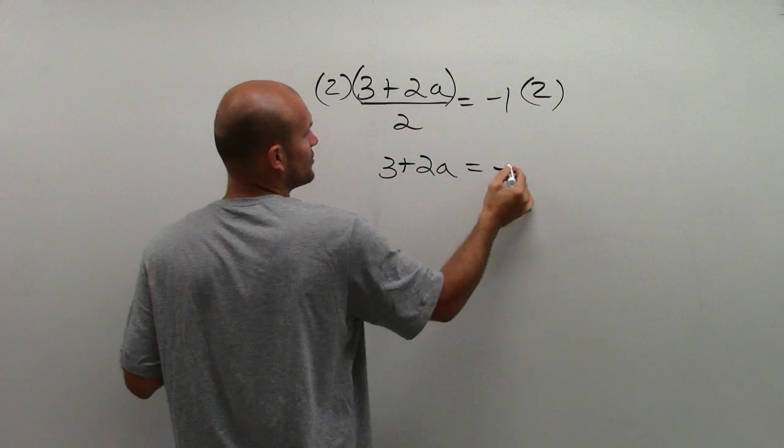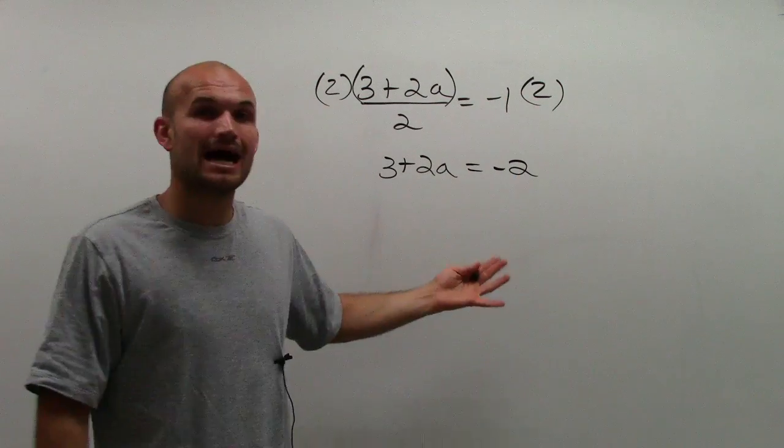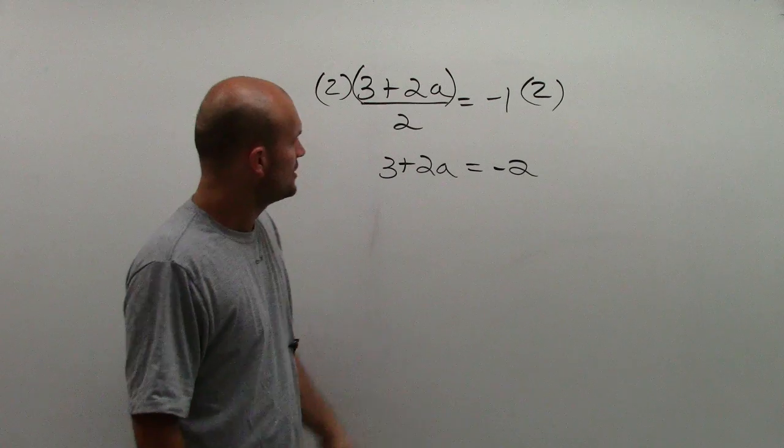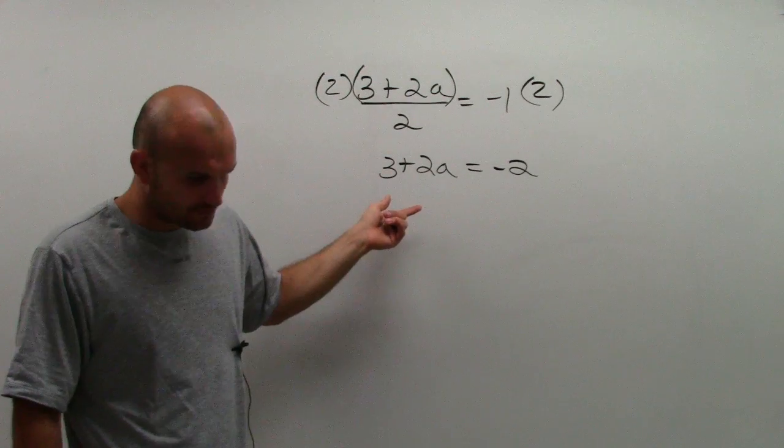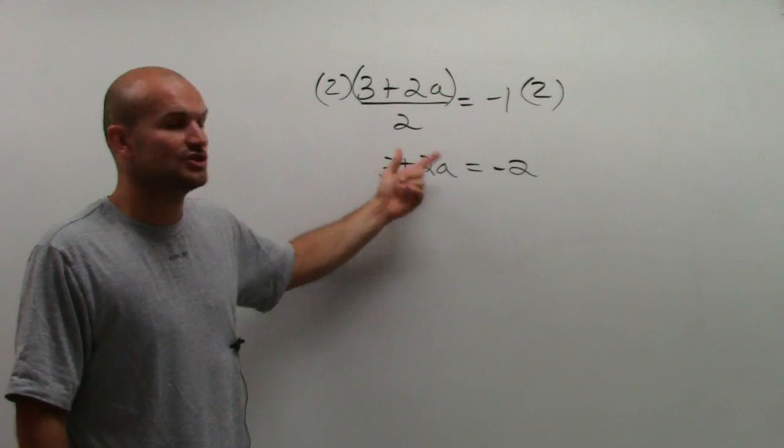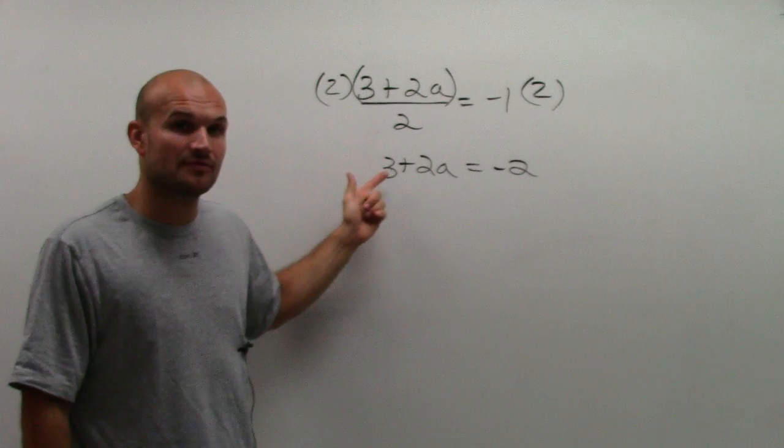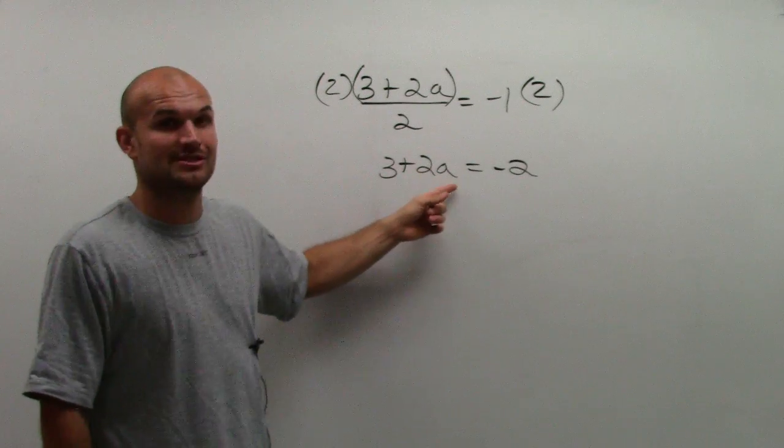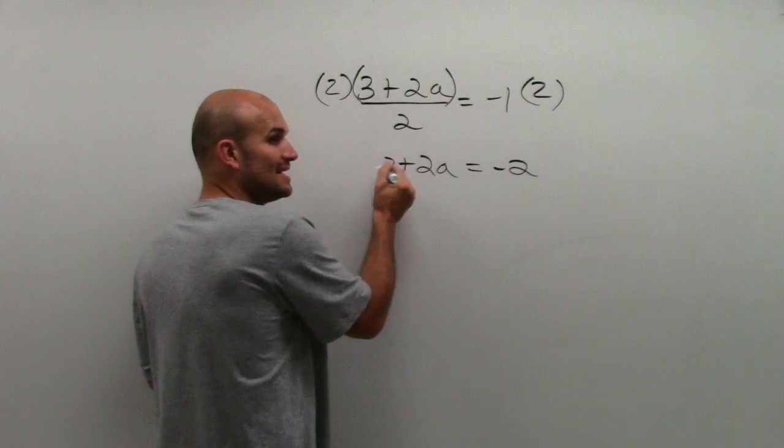Negative 1 times 2 is negative 2. Now I have a lovely two-step equation that I can solve. So remember, I have 3 plus 2a. Since that's a positive 3, I'm adding the 3 to my 2a.